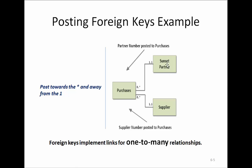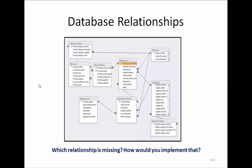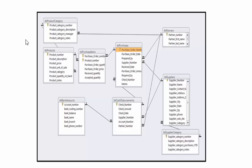In this example, the employee number for the Sunset partner would be posted in the purchases event, and the supplier number — the primary key of the supplier table — would also be posted in the purchases event. Here we have an implementation in Access: we have transferred the UML diagram to the Access relationship screen. We have product category classifying products, a linking table between products and purchases, the cash disbursements event affecting cash, a table representing the Sunset partners, and a table representing the suppliers, with suppliers categorized by supplier category.